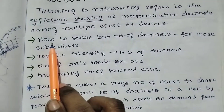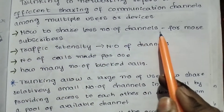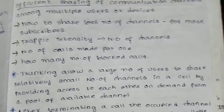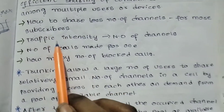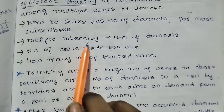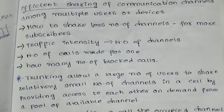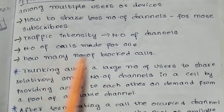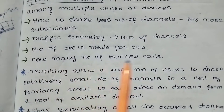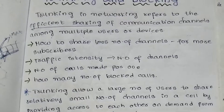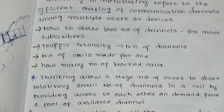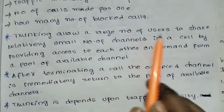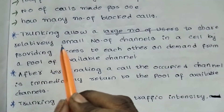Trunking describes how to share a smaller number of channels among more subscribers. If you have fewer channels, you can share them among many subscribers. The traffic intensity describes how channels are shared, and the number of blocked calls is also a key measure. The main point is that trunking allows a large number of users to share a relatively small number of channels.